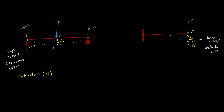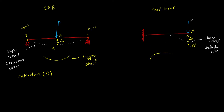One more point to observe is the shape of the elastic curve. In a simply supported beam, the elastic curve bends into a sagging shape. Whereas in the case of a cantilever beam, when loading is acting, the beam bends into a hogging shape.